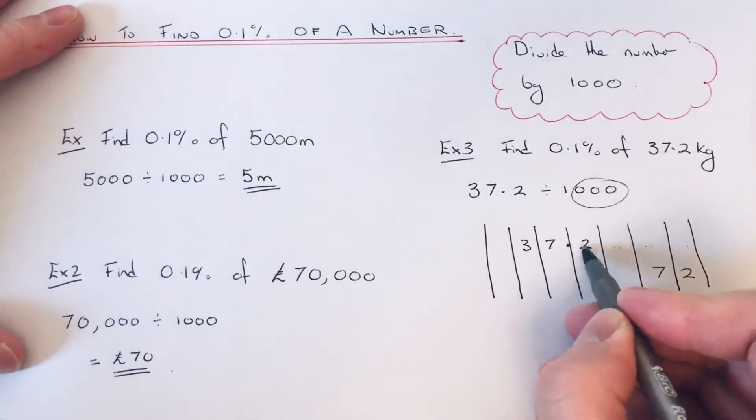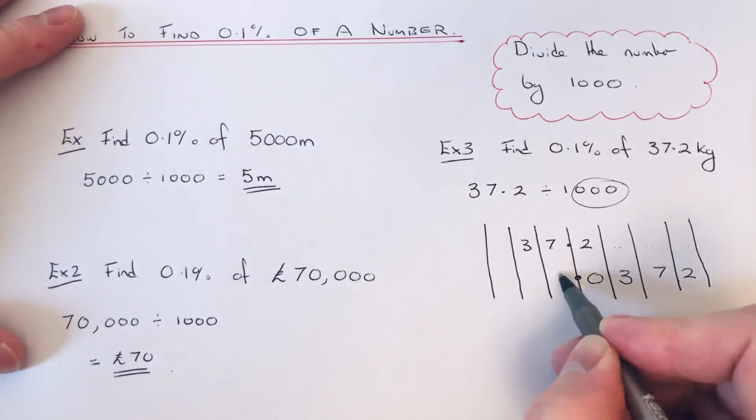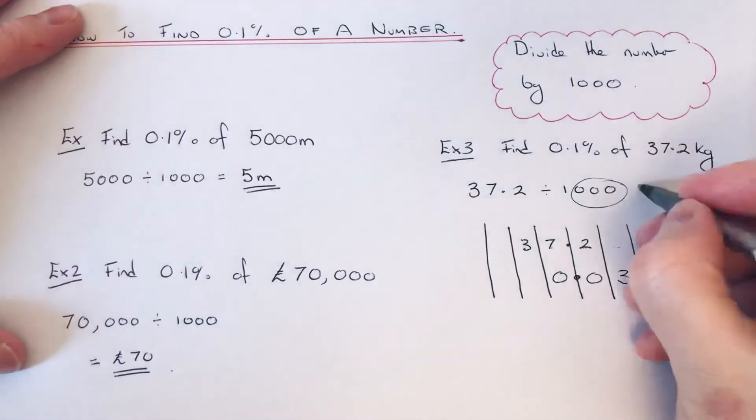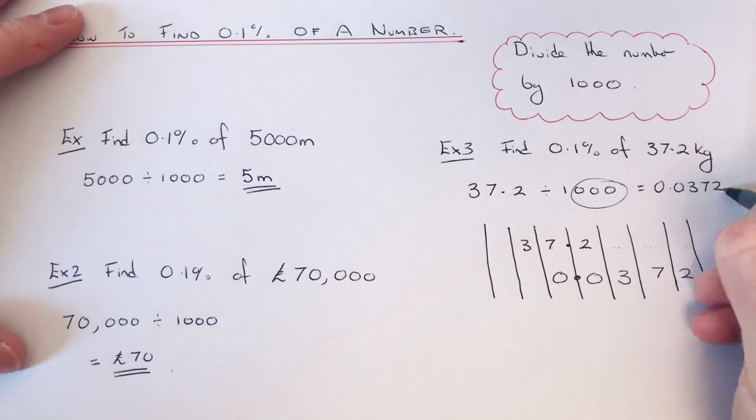And the three goes 1, 2, 3. Decimal point doesn't move. Fill in the gap there with a zero. Put a zero before the decimal as well. So that will give an answer of 0.0372.